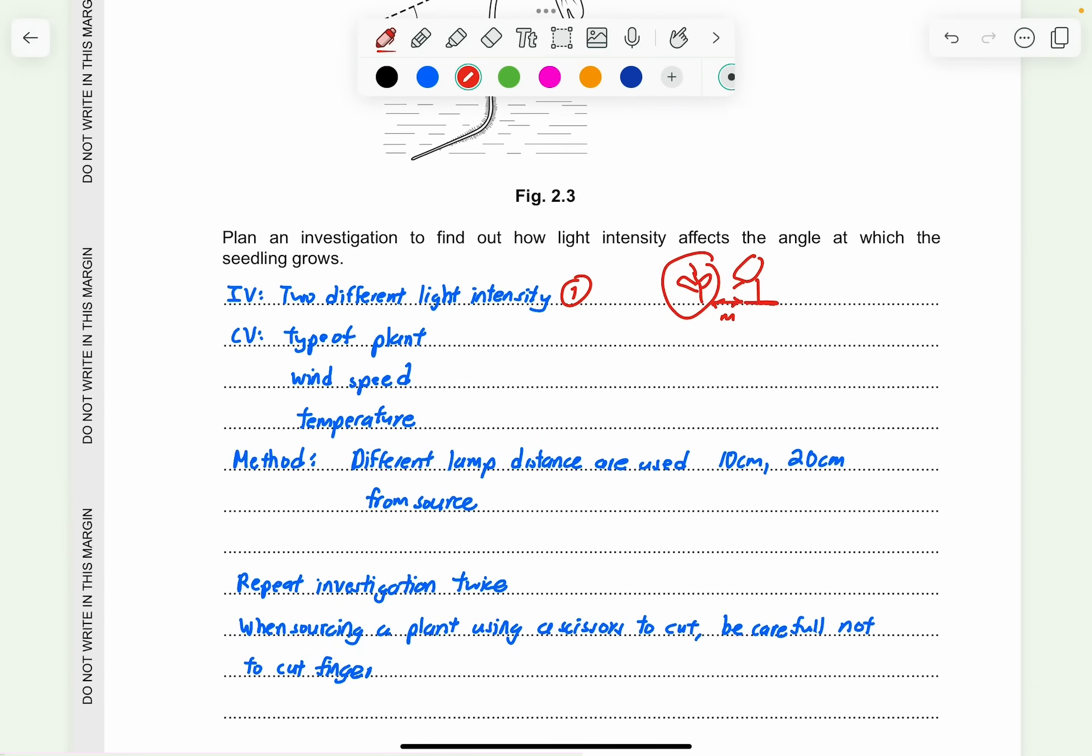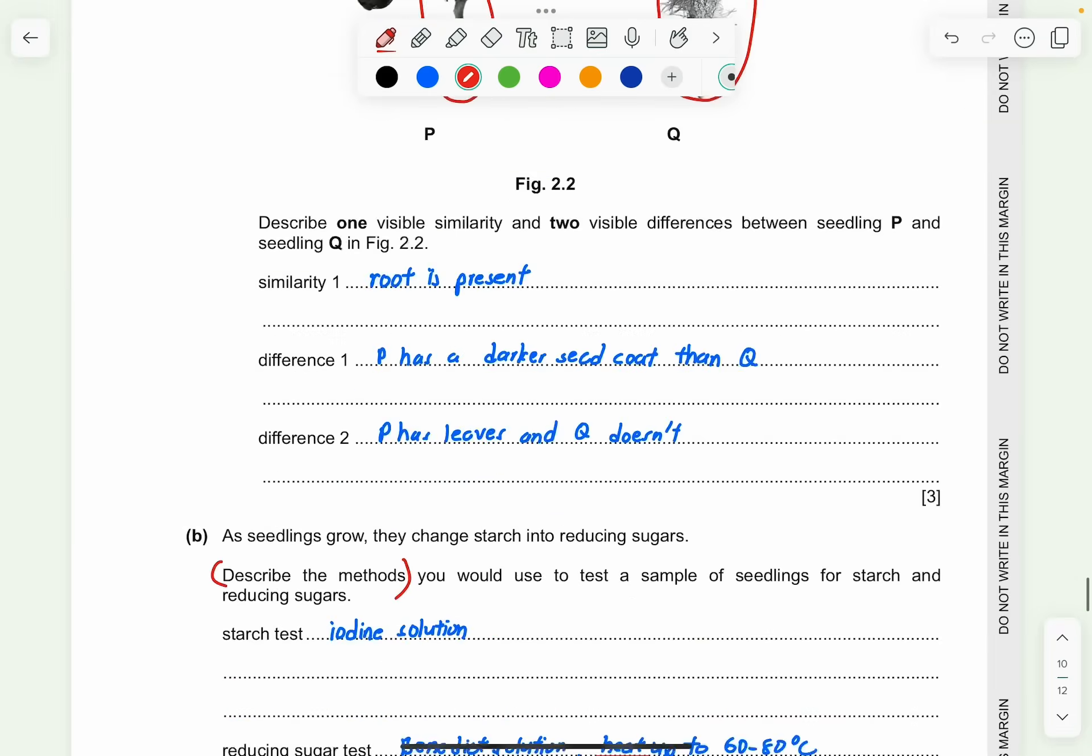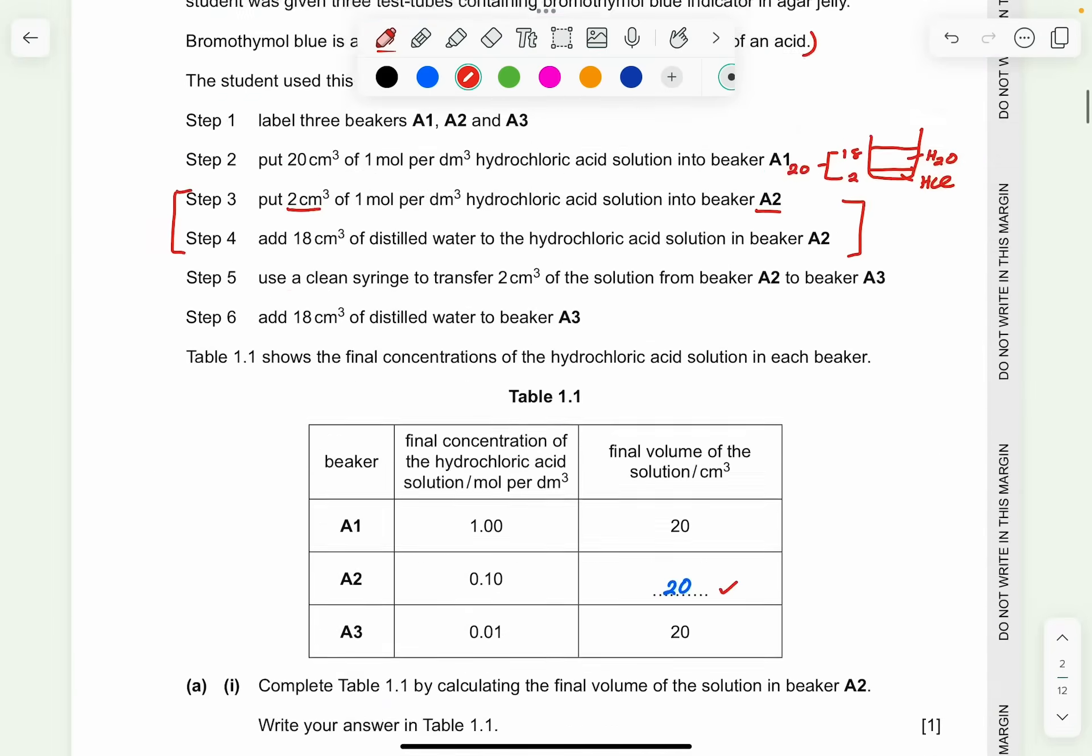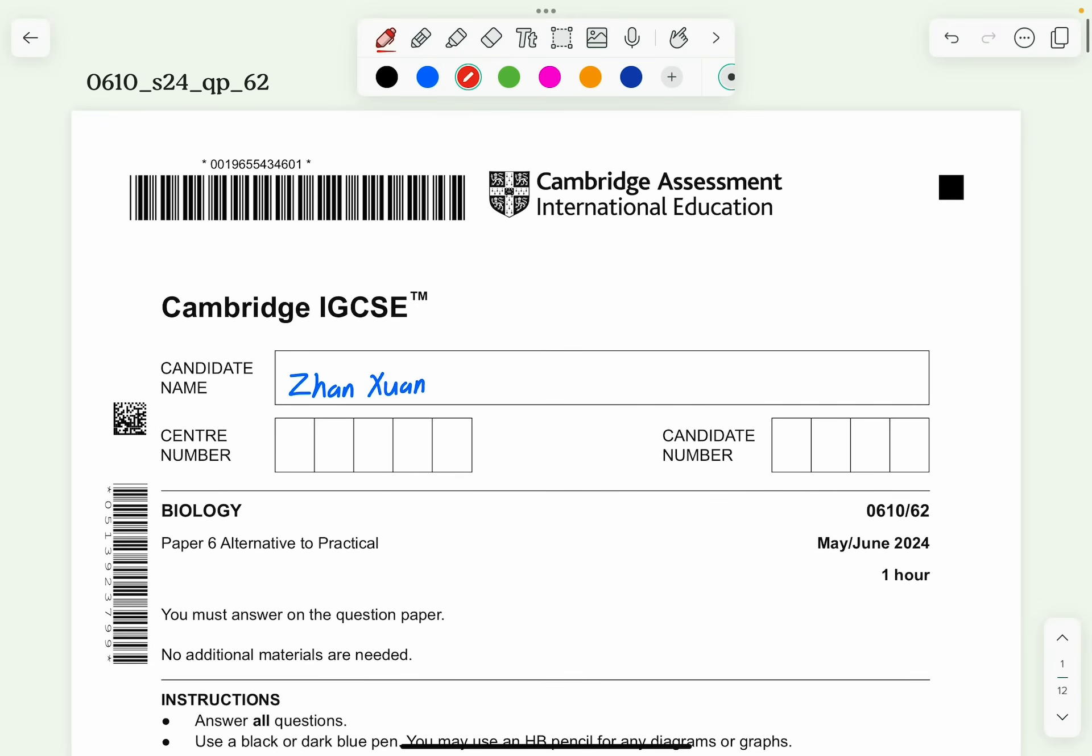So this is how you're going to score for this six marks. It's going to be very easy. One mark from here, you can get two or three marks from correct answer in the CV. One mark or maybe two sometimes. One mark and one mark. And you're going to get six marks very quickly for this question. So that's it for this paper. Thank you so much for watching. See you guys in the next video. Bye-bye.